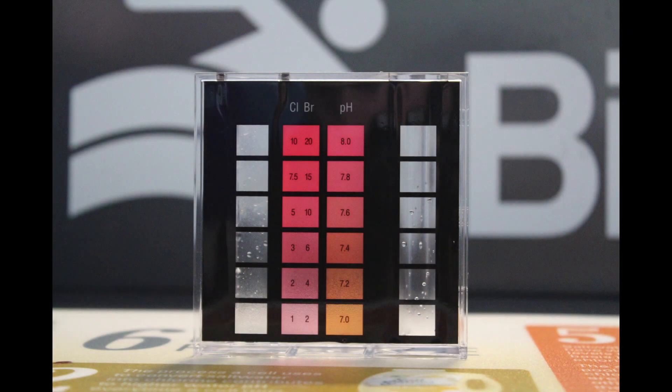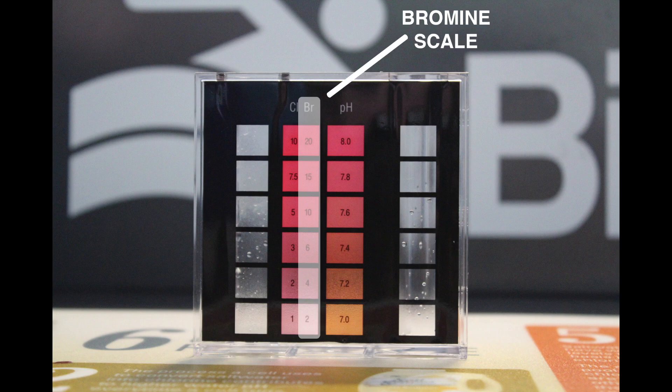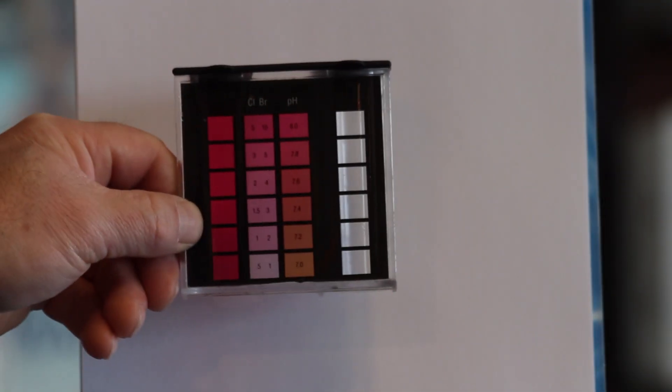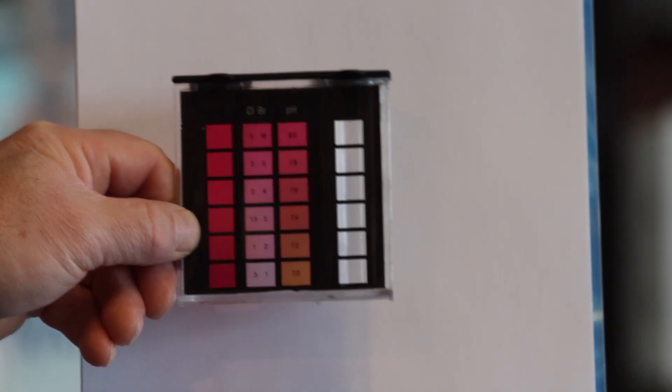To test bromine, repeat the free chlorine test but match the sample to the bromine scale on the comparator block. If the color is off the scale, darker than the comparator tube when testing either chlorine or bromine, dilute the sample with tap water.